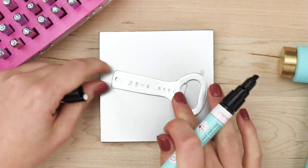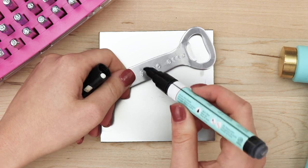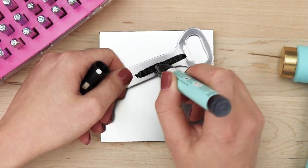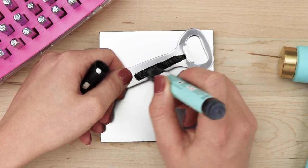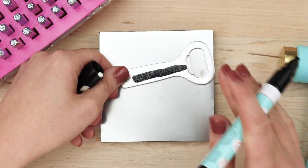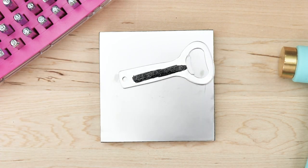To make your impression stand out, highlight the impressions on the bottle opener with stamp enamel marker. Wait three minutes, give or take, until the enamel dries completely.